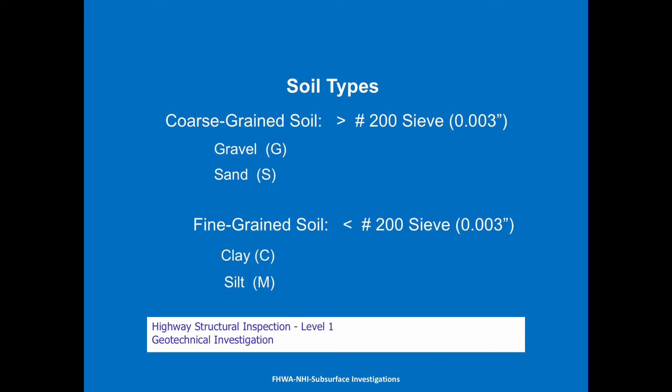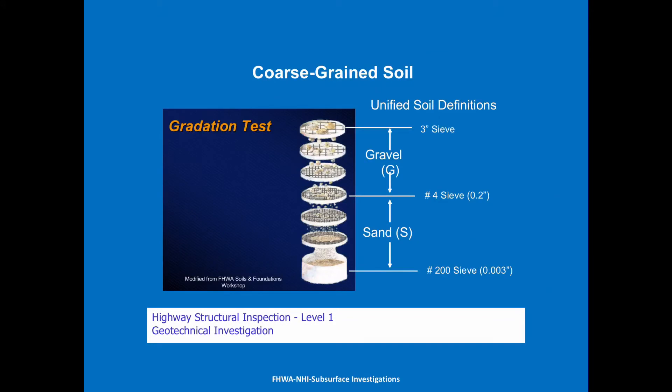So what are our soil types? Looking at the Unified Soil Classification System, coarse grain soils are any soils retained on a number 200 sieve — that's the magic sieve that can actually hold water. Anything above that is our gravels and sands. Anything that passes through the number 200 sieve is our fine grain soils — clays or silts. On the sieve analysis, anything from a number four and up is considered a gravel, anything from number four and down is a sand, and anything below the 200 sieve is a silt or clay.